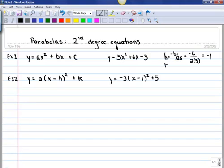To find the k value of the vertex, you substitute negative 1 back into the equation and then just do arithmetic to solve for k. When we do that, we end up seeing that our k value for this one is negative 6.